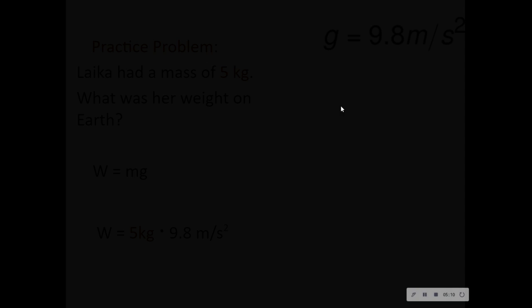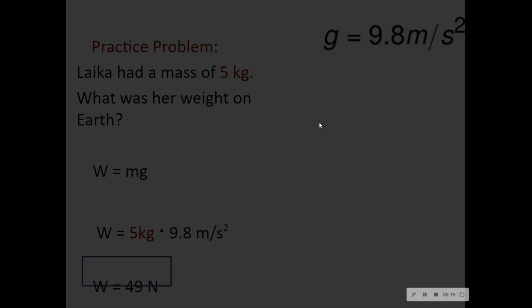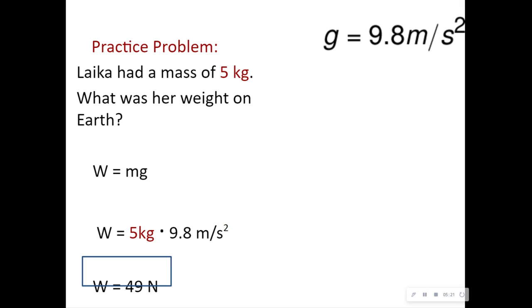So 5 kilograms times 9.8. In this case, Laika has a mass, I'm guessing it's going to be pretty small, since it's only 5 kilograms. It's probably some dog. Or Laika. Well, it's Laika. That sounds like a dog name. It's going to be 49 newtons. And we continue on from there.